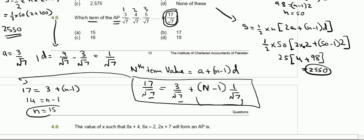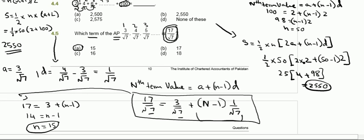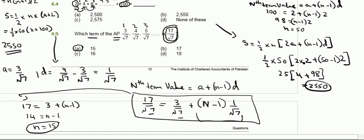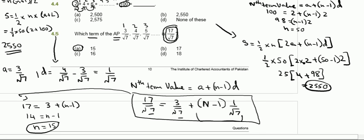The answer for 4.5 is option A. You can try these five questions, and I will be solving more questions from the same chapter in the next video. Thank you for watching.